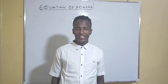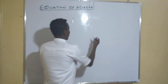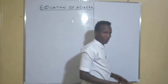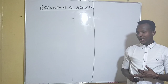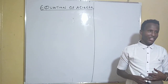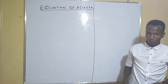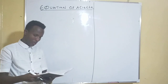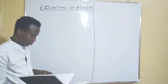Assalamu alaikum, my dear brothers and sisters. Welcome back. This is my brother Abdi Mohamanur, who will be taking you through mathematics — Form Theory, basically equations of a circle. Today we will teach you how to get the equation of a circle given the center and radius, as well as how to get the center and the radius given the equation. Let's start our first example.